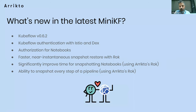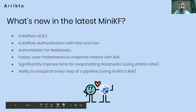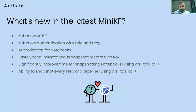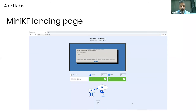What's new in the latest MiniKubeflow based on Kubeflow 0.6.2? It enables multi-user authentication so you can have multiple users spinning up their notebooks in an isolated way. If integrated with Rok, you can do near-instantaneous restore of snapshots. When you have a notebook server, you can snapshot it, shut it down, then spin it up almost instantly days or weeks later. We've also significantly improved snapshot time and added the ability to snapshot every step of a running pipeline to enable going back in time.